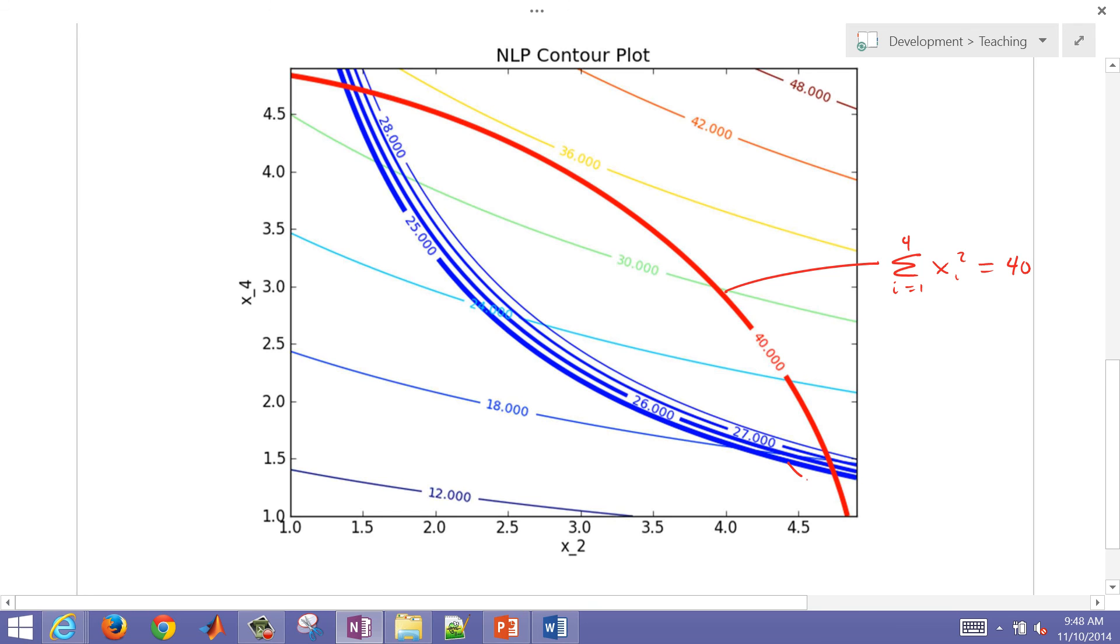We also have here the product, product i equals 1 to 4, x_i. That was greater than 25. So we have our two constraints, and then we also show our objective contours here.